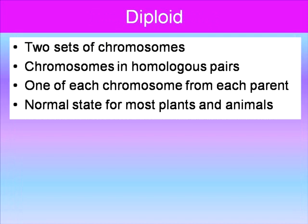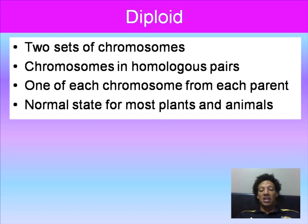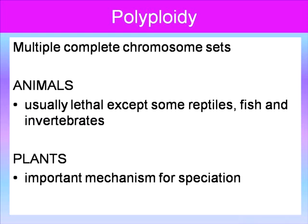Diploid means two sets of chromosomes — that's common in humans, most plants, and most animals. Chromosomes are in homologous pairs, one of each chromosome from each parent — a normal state for most plants and animals. Now you have polyploidy, which you should have covered in your essays. This is like aneuploidy but multiplied across the entire karyotype — it means multiple complete chromosome sets. In animals, this is usually lethal, except for some reptiles, fish, and invertebrates. In most plants, it's an important mechanism for speciation.